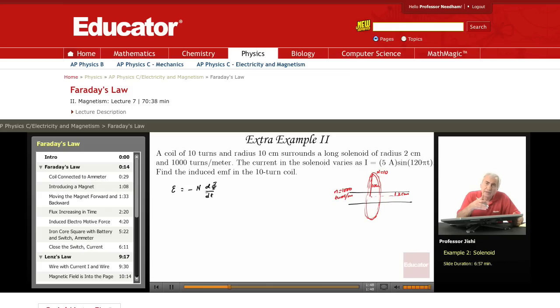We have to find Φ. How does Φ change with time? The flux, the magnetic flux. Now, the flux means there's a magnetic field. Where is the magnetic field?